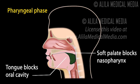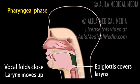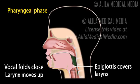The tongue blocks the oral cavity to prevent going back to the mouth. The soft palate blocks entry to the nasal cavity. The vocal folds close to protect the airway to the lungs. The larynx is pulled up with the epiglottis flipping over, covering the entry to the trachea. This is the most important step, since entry of food or drink into the lungs may potentially be life-threatening. The upper esophageal sphincter opens to allow passage into the esophagus.